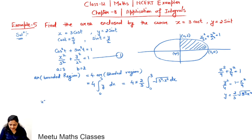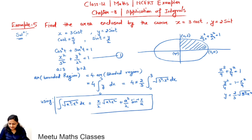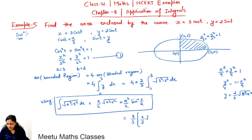Using the standard integral formula: ∫√(a² − x²) dx = (x/2)√(a² − x²) + (a²/2) sin⁻¹(x/a). Now we substitute the limits from 0 to 3.